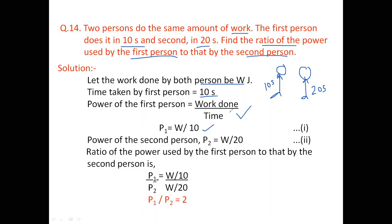Power of the second person is W by 20, because that work takes 20 seconds. The ratio of power used by the first person to that by the second person is P1 by P2. This W and this W will cancel. So the ratio of the power used by the first person to that of the second person, P1 by P2, is equal to 2.